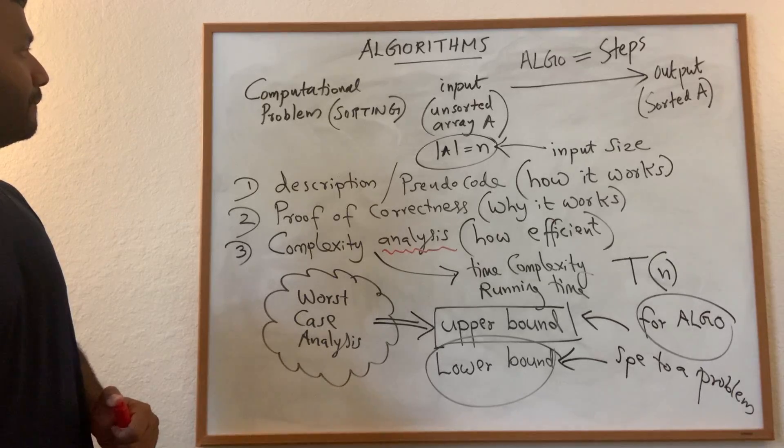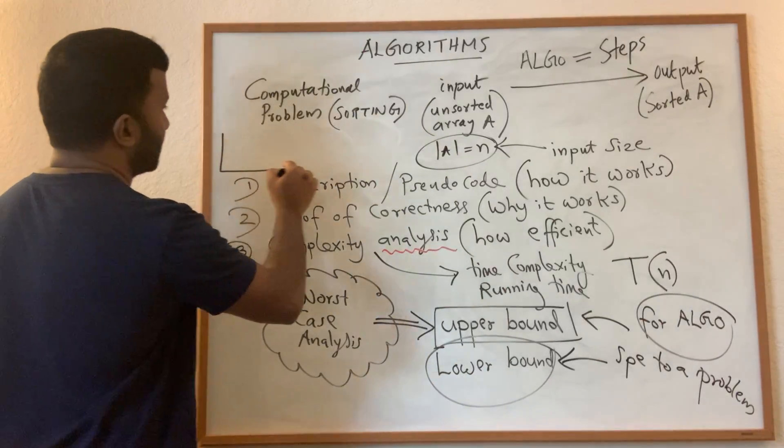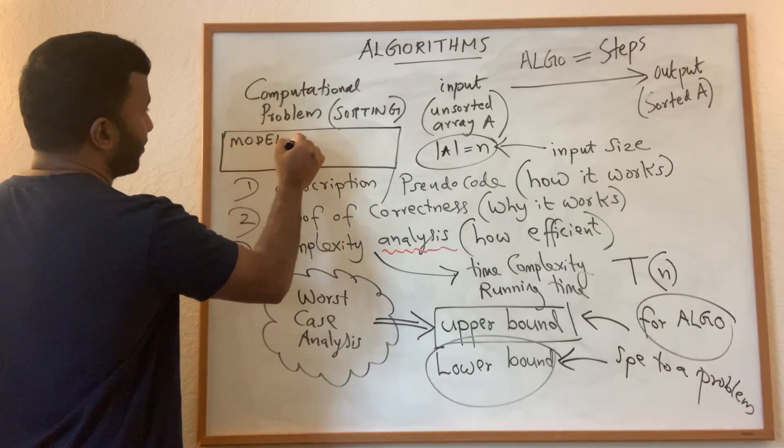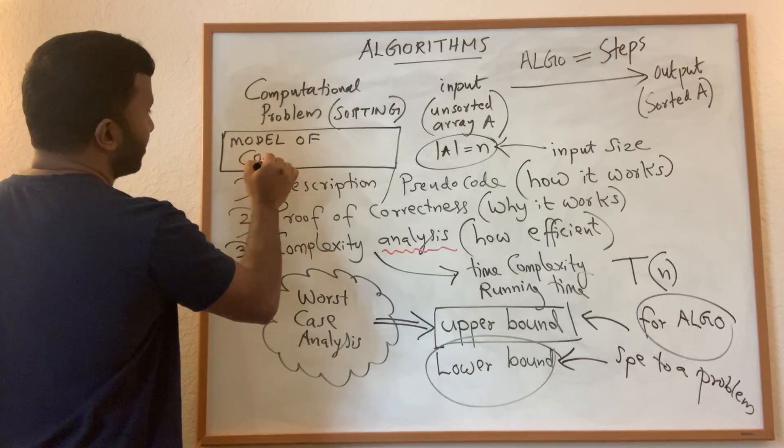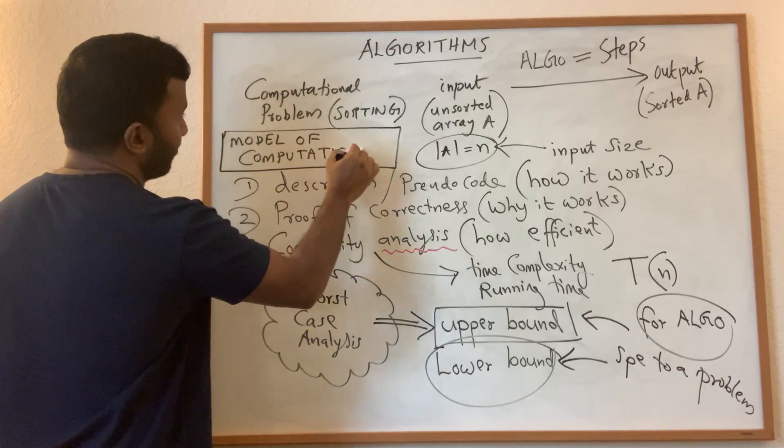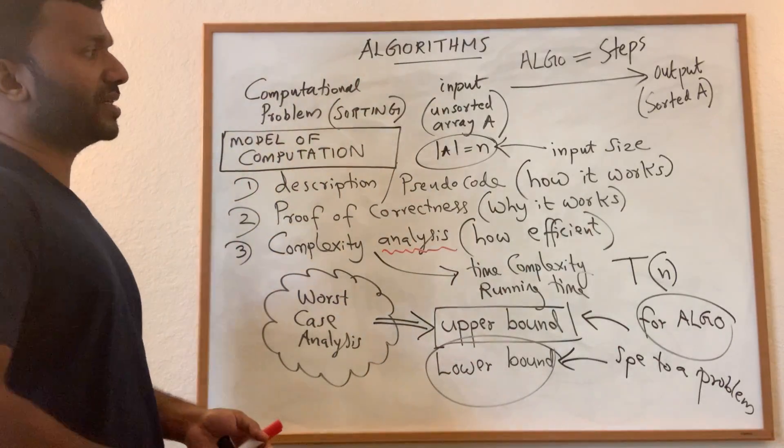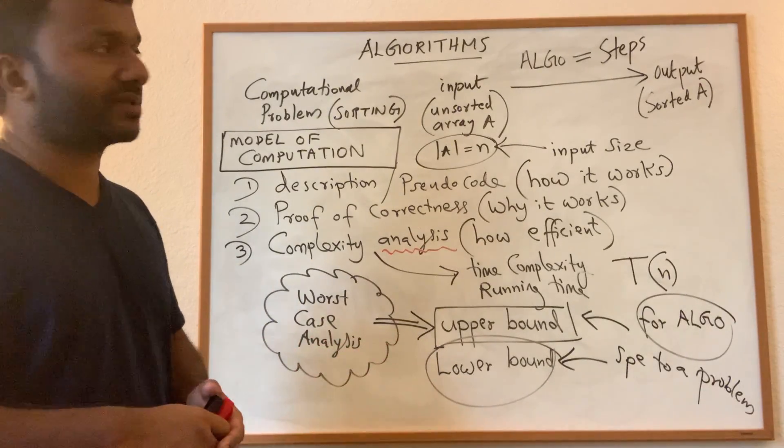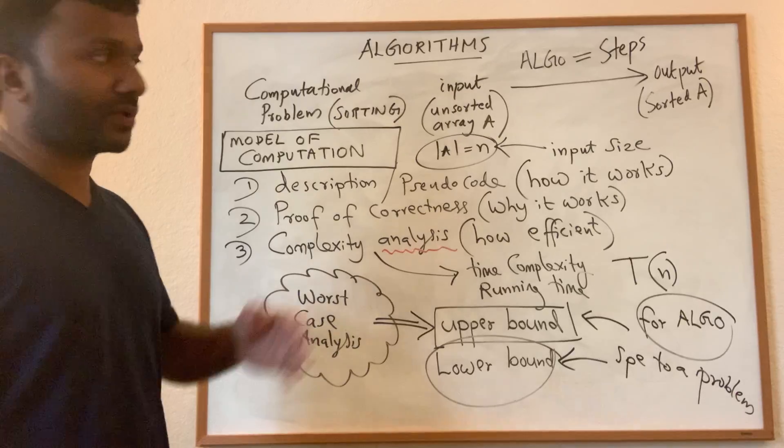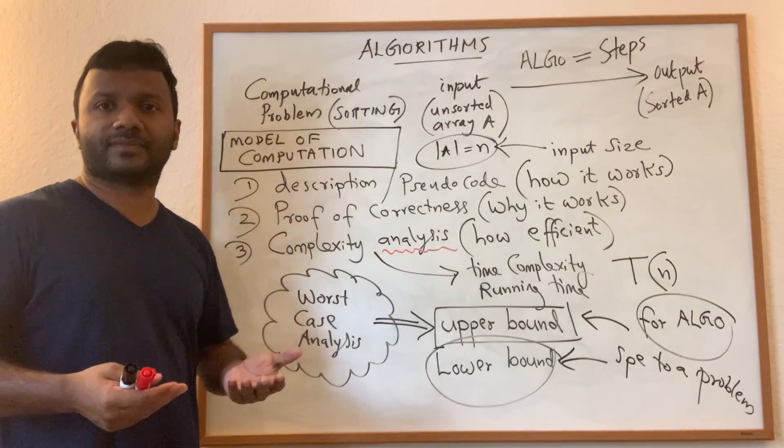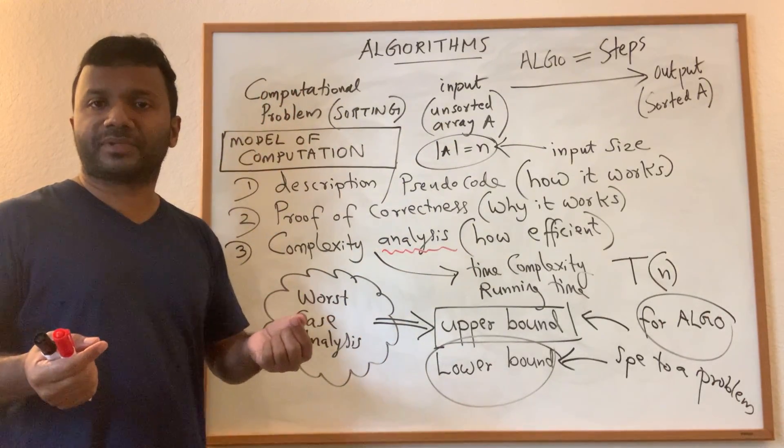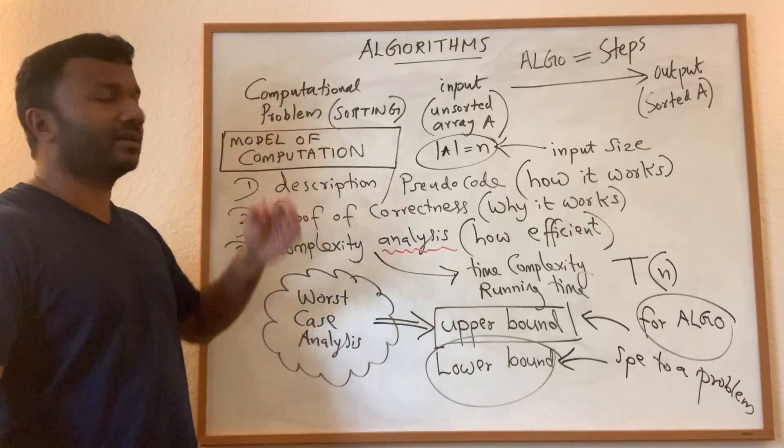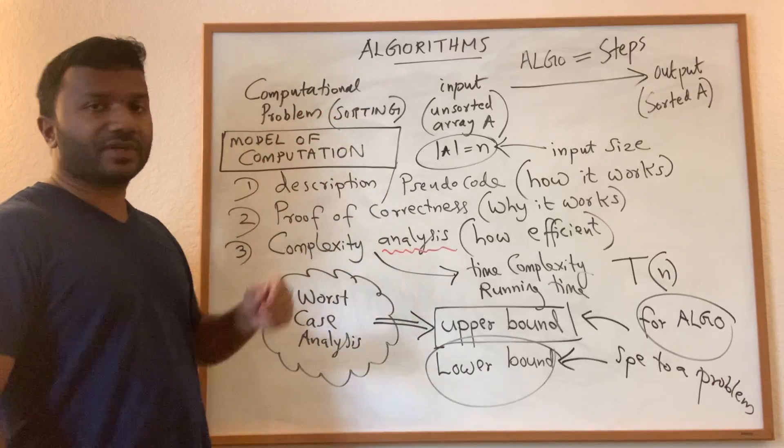The last thing I want to mention is what is called model of computation. So model of computation is essentially the set of basic operations you are allowed to perform. So in the case of sorting the basic operation is comparison. You are allowed to compare two numbers and figure out if they are the same or if one is larger than the other. So that is a basic operation allowed in sorting.